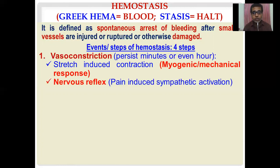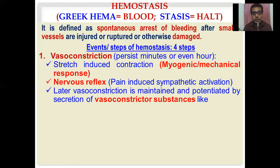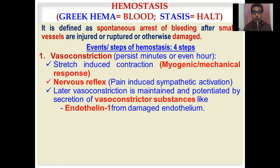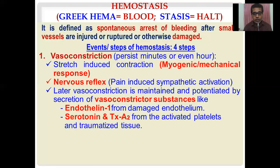The second mechanism is the nervous reflex, caused by pain-induced sympathetic activation resulting from vascular injury. The third mechanism is that physical constriction is maintained and potentiated by secretion of vasoconstrictor substances: endothelin-1 from the damaged endothelium, and serotonin and thromboxane A2 from activated platelets and traumatized tissue.